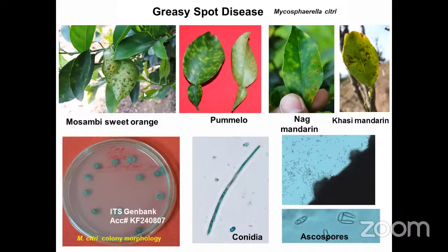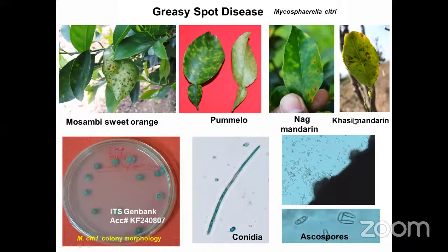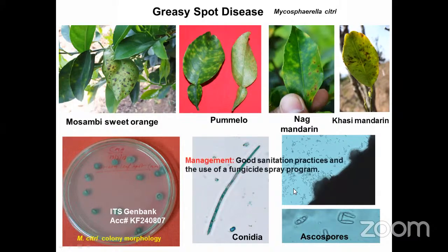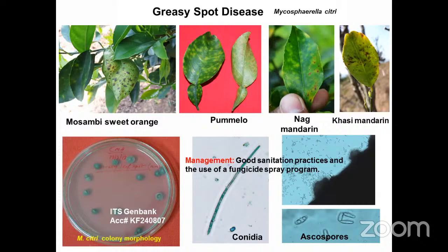Another fungal infection is greasy spot, showing typical greasy-like lesions. It first appears on the back side of the leaf, then as infection increases it can be seen on the front side. Infection levels in Mosambi sweet orange, pomelo, Nagpur mandarin, and Kasi mandarin have been identified. The fungus was identified as Mycosphaerella citri. Good sanitation practices and fungicidal spray programs are recommended. Most of the pathogens discussed survive in fallen leaf litter, so fallen leaves should be eliminated from the orchard.